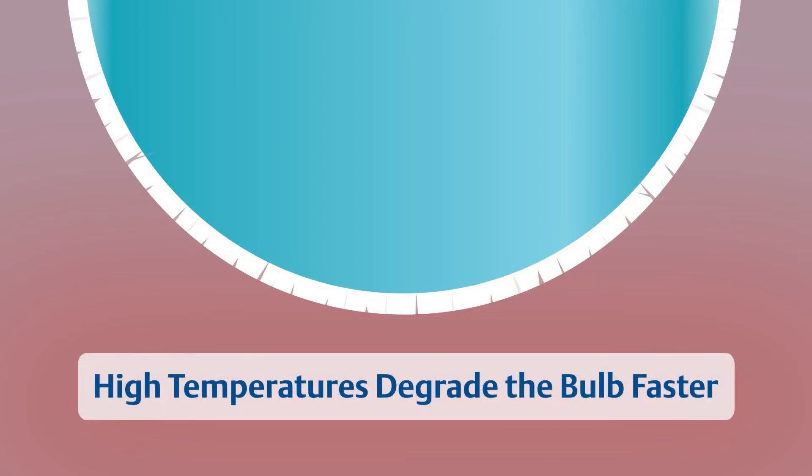Over time, the glass bulb degrades and its responsiveness to pH diminishes. High temperature dramatically increases the rate at which the glass bulb degrades.